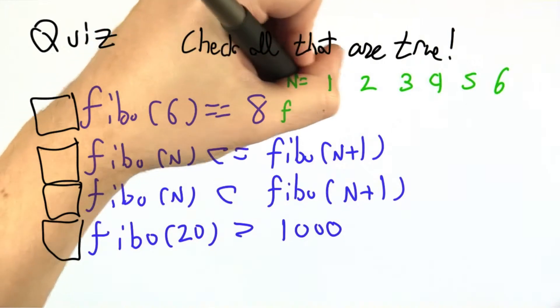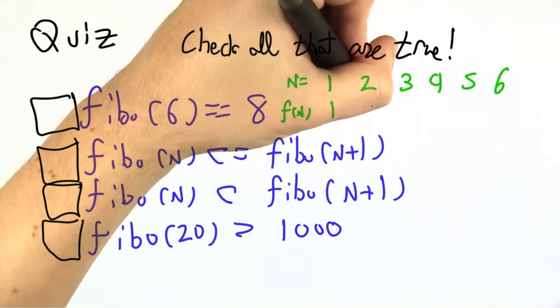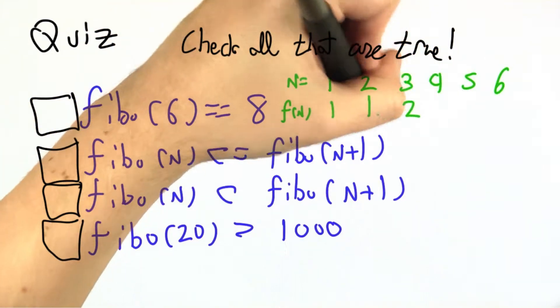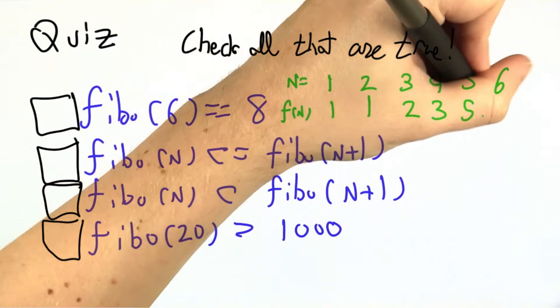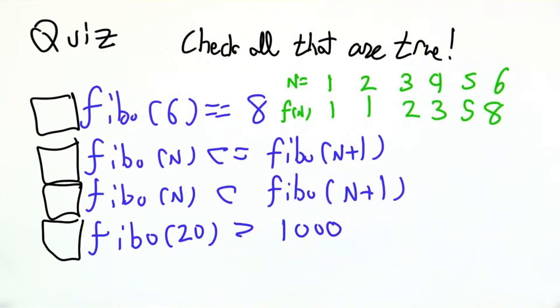we said that Fibonacci of n was 1, 1, 2, 3, 5, 8. It does look like Fibonacci of 6 equals 8. Great.